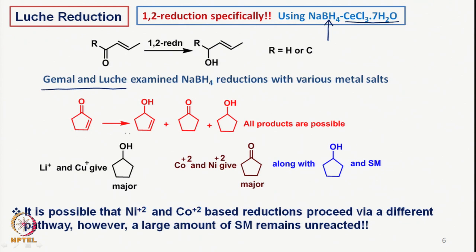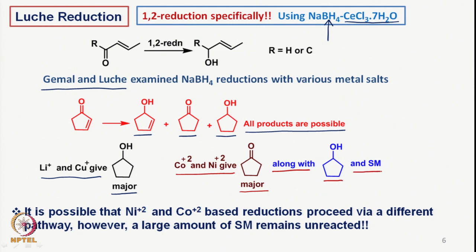As we can see here, there are possibilities of all three types of products: allylic alcohol, saturated ketone, and completely reduced saturated alcohol. Lithium and copper were found to give the completely reduced product as the major product. If one uses cobalt and nickel salts along with sodium borohydride, they give the saturated ketone as the major product along with saturated alcohol, though a large amount of starting material remains unreacted.